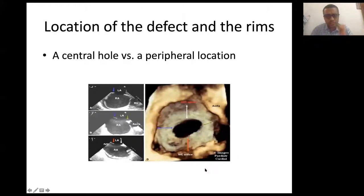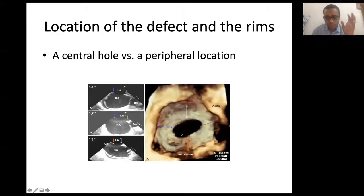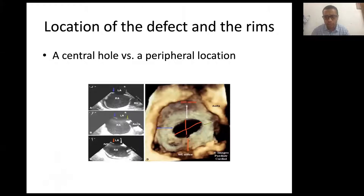Looking at this 3D echo image of a central defect, the location and rims are very important. This is an oval defect with a major axis and minor axis. Most defects are ellipsoid or oval, and they may be central or peripheral — located superiorly and posteriorly, superiorly and anteriorly, or sometimes very inferiorly.